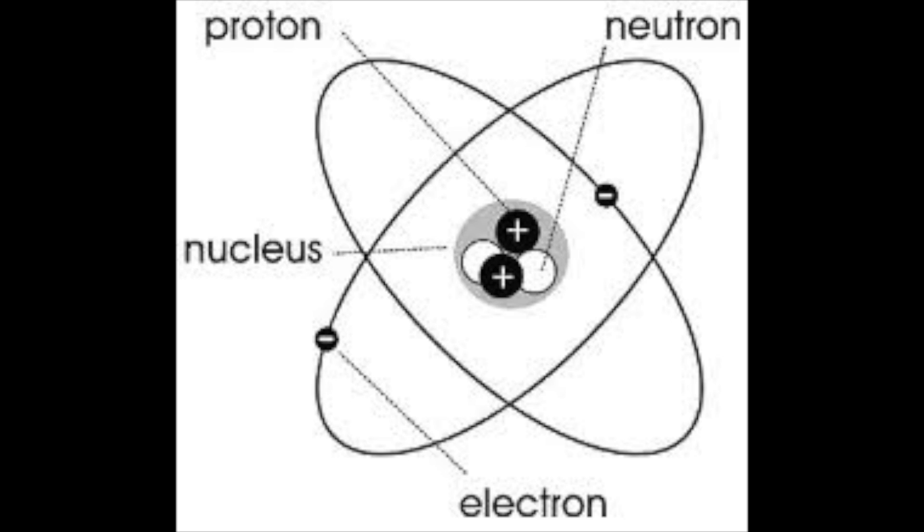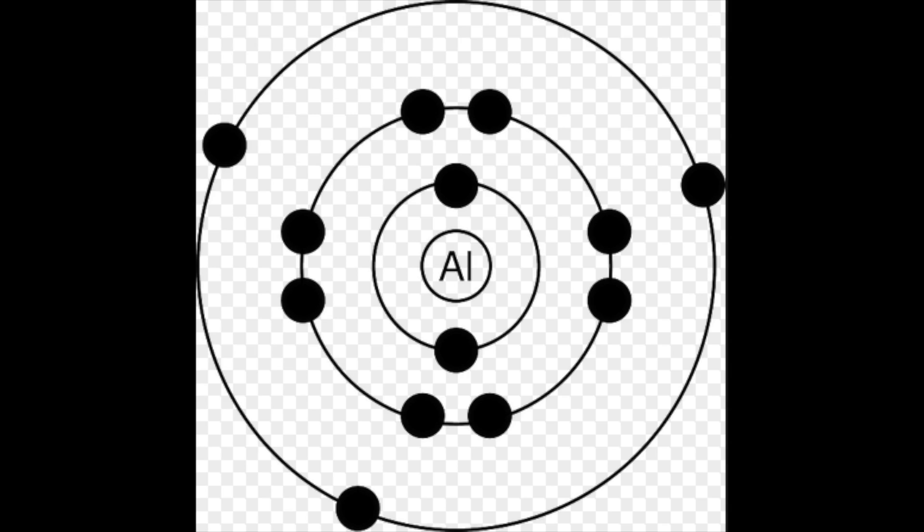Now let's talk about the arrangement of these particles within the atom. The mass of an atom is found in its nucleus, which automatically tells us that the protons and neutrons are found inside the nucleus. The electrons exist in what we call shells — concentric circles which surround the nucleus and spread out. There are just a couple of things you need to know about electron placement. The first shell, so that's the first circle, can only have two electrons in it — one at the top, one at the bottom.